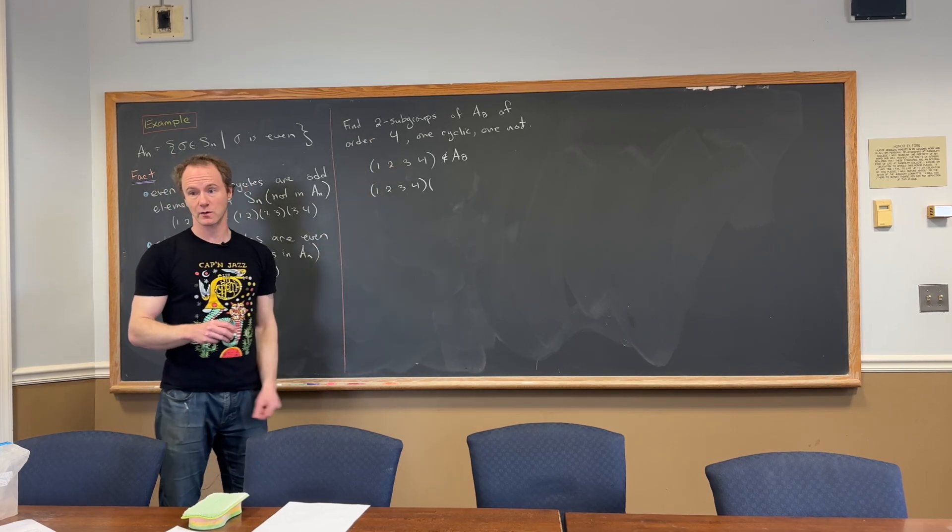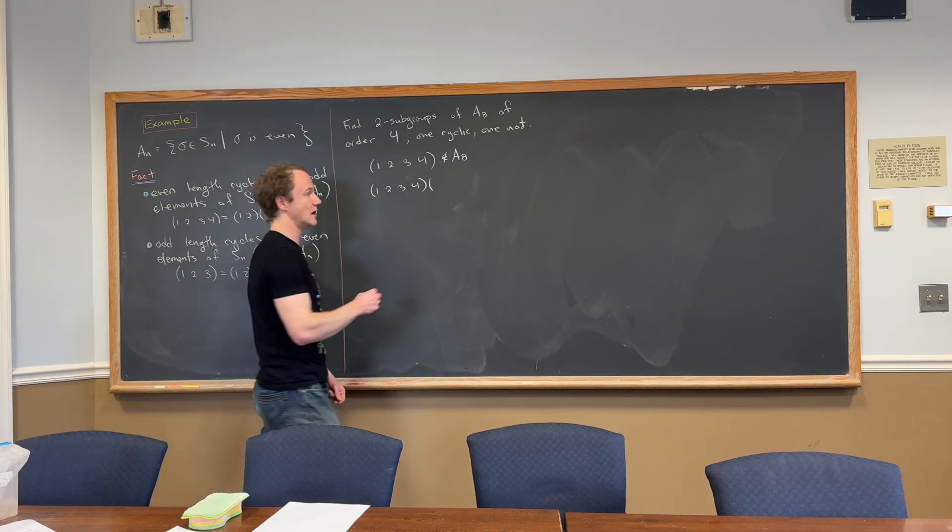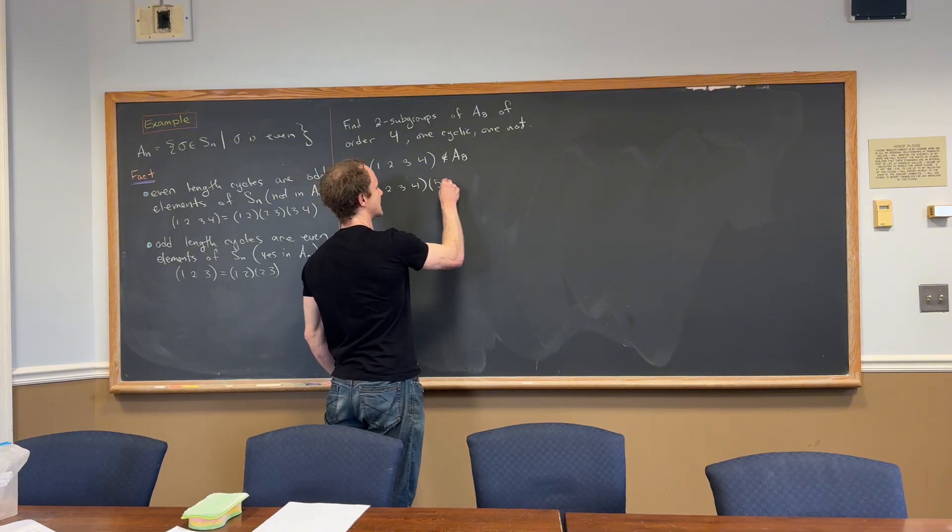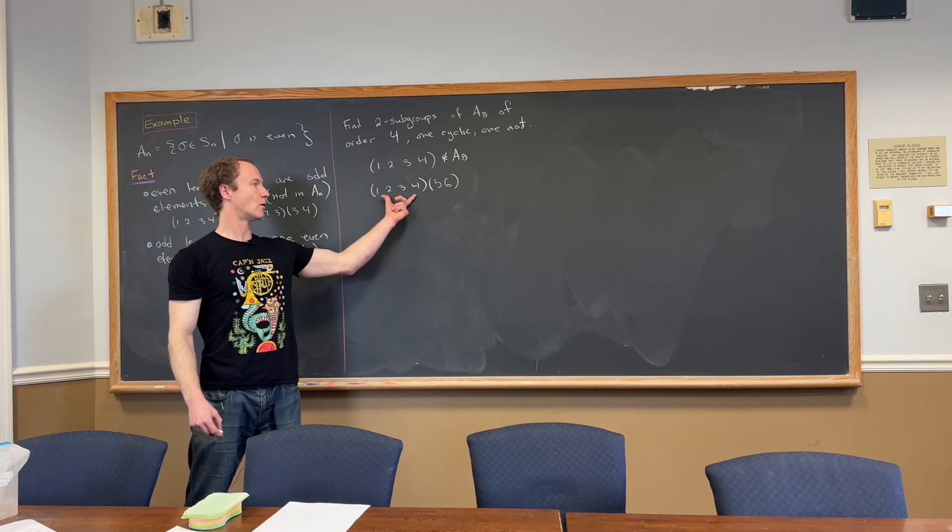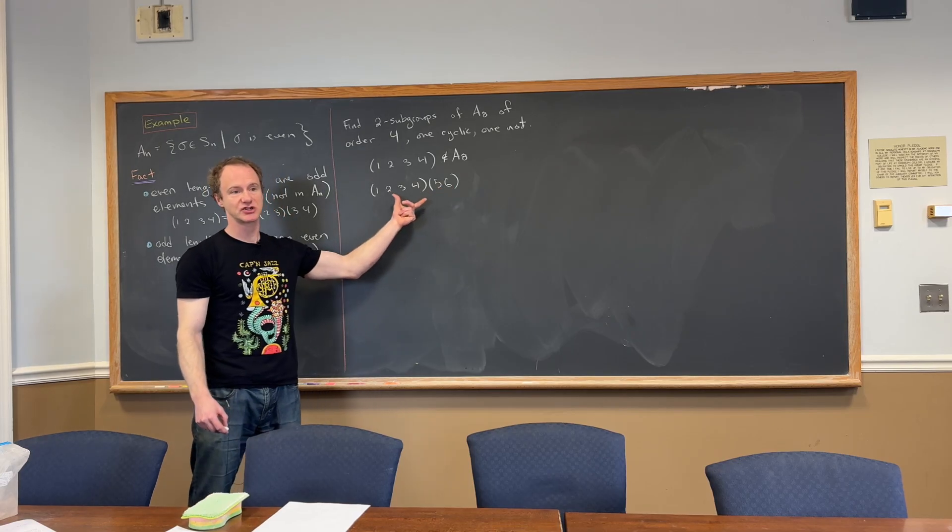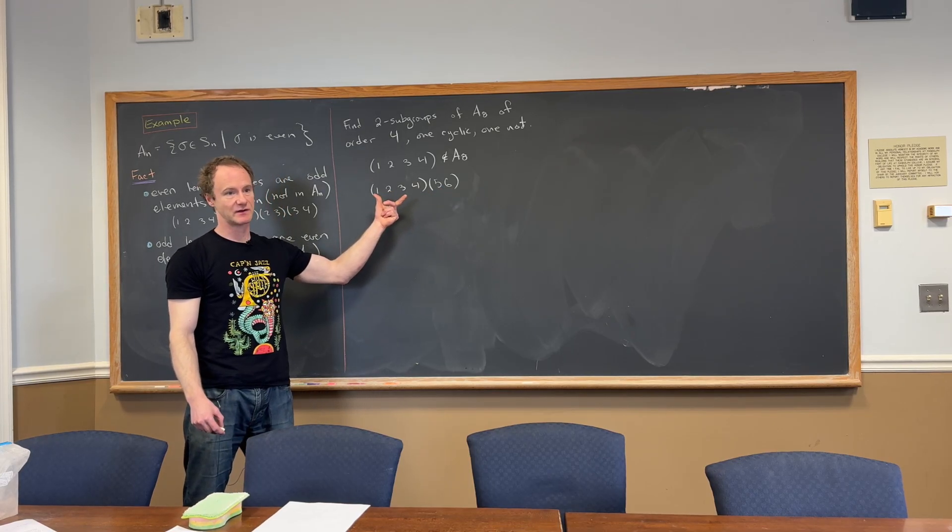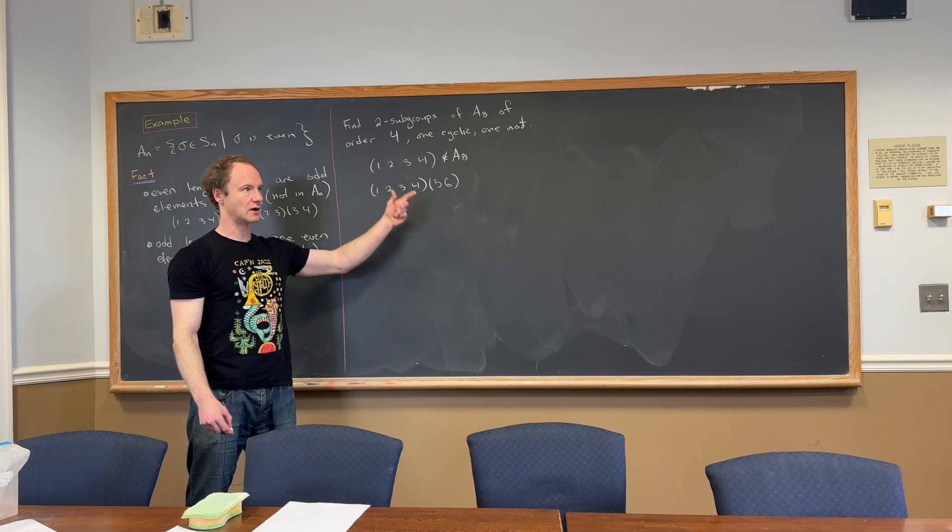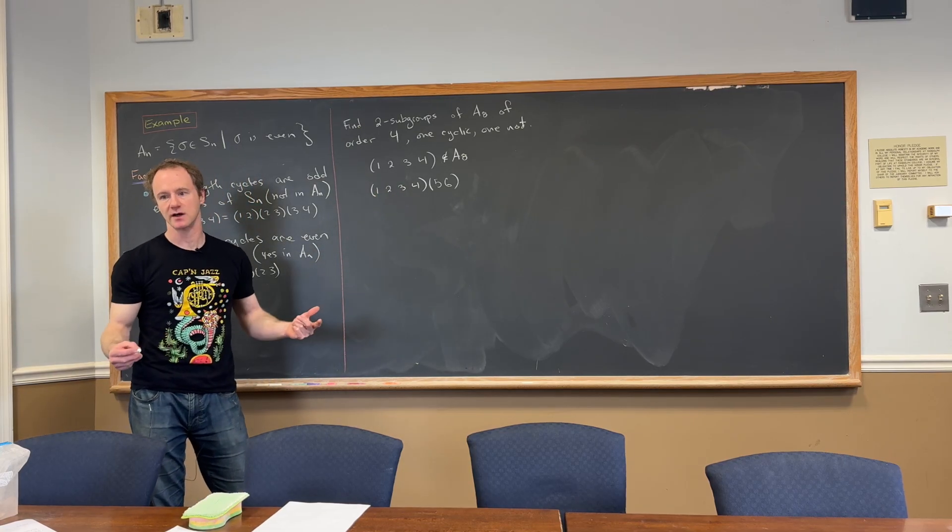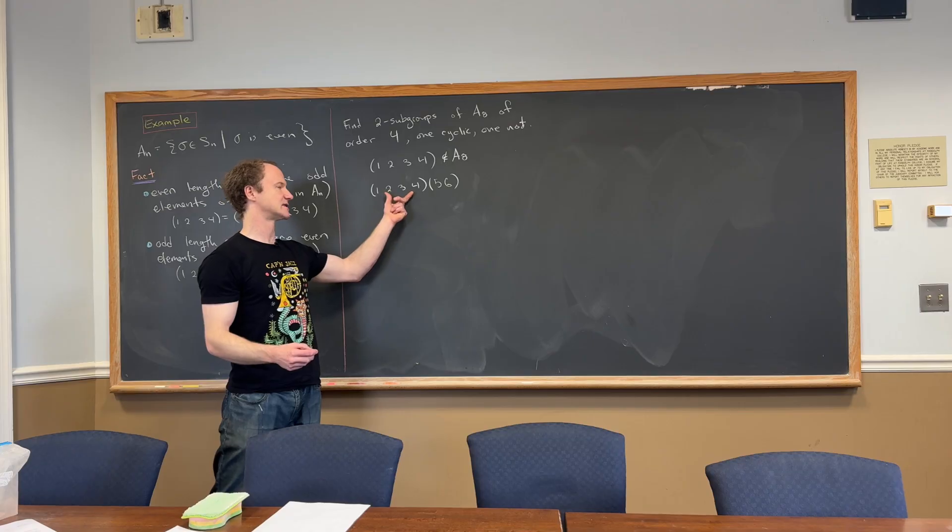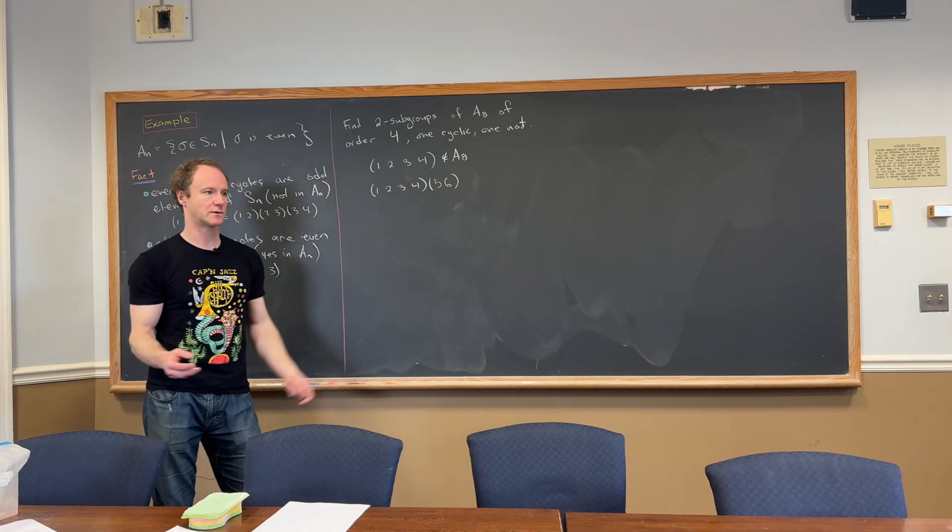But we're in A8, so we're in a place that's big enough. We've got a number of different choices. We could take (5,6). So this has order 4. This has order 2. These are disjoint. And we know that any time you've got disjoint cycles, the order of the whole thing is the LCM of the length of the cycles. So the order of this is the LCM of 4 and 2. The order's 4.